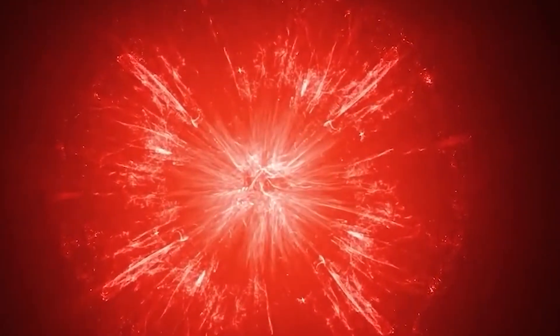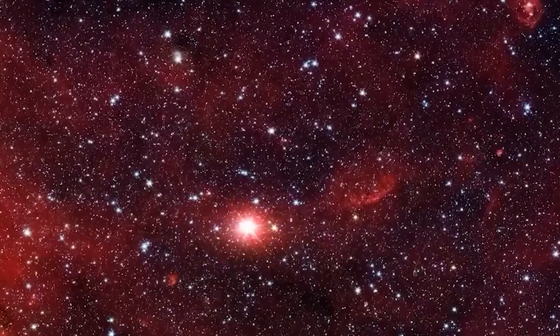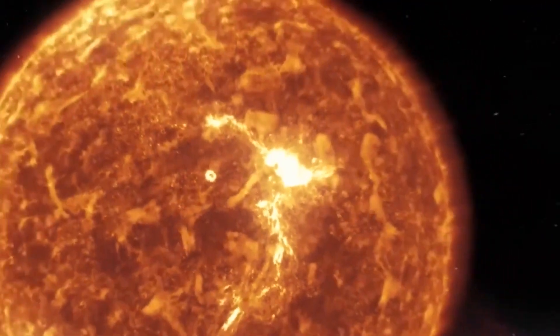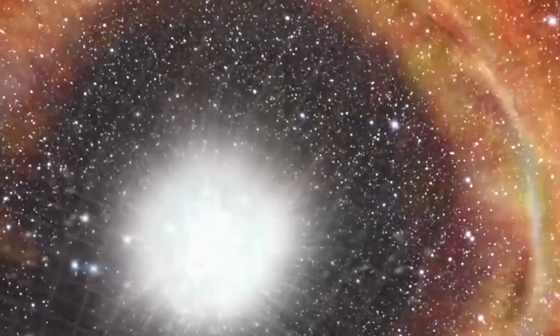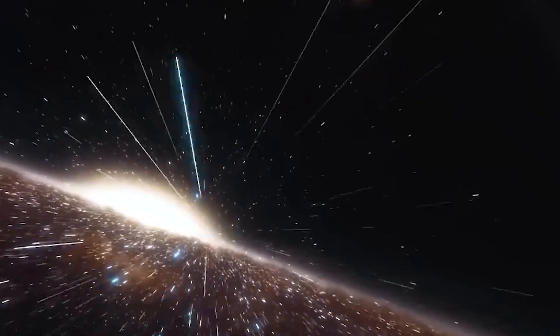As a red supergiant, Betelgeuse's anticipated explosion would be classified as a type 2 supernova. This category is reserved for stars exceeding eight solar masses, where the collapse of the core leads to a cataclysmic outburst.